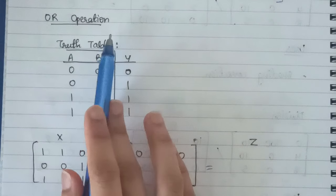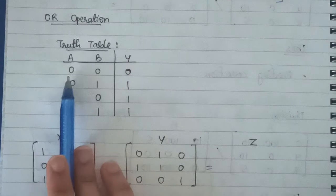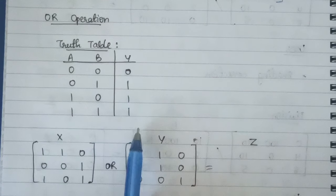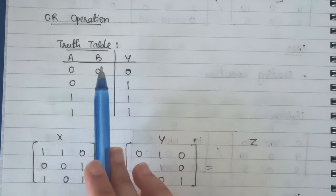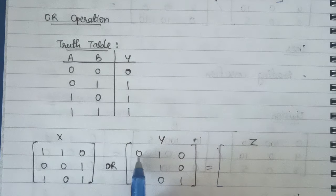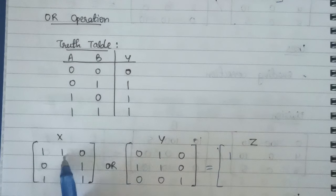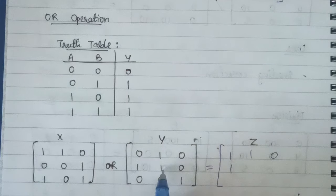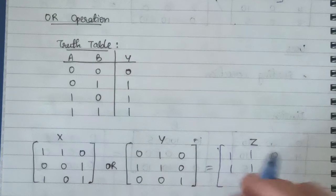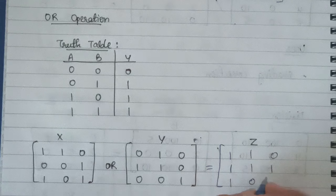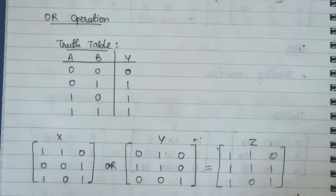The next operation is OR. Its truth table shows that only when both inputs are 0 is the output 0; in all other cases the output is 1. Solving the same example: 1 OR 0 is 1, 1 OR 1 is 1, 0 OR 0 is 0, 0 OR 1 is 1, 1 OR 0 is 1, 0 OR 0 is 0, 1 OR 1 is 1. In this way we get the output for the OR operation.